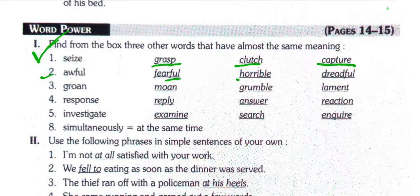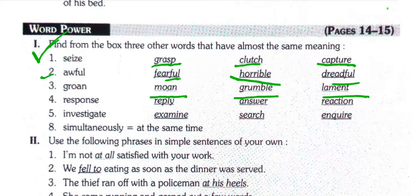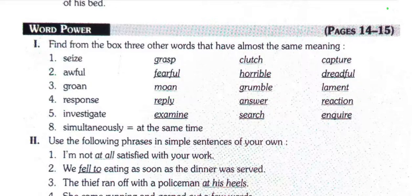Fearful, horrible, and dreadful. For 'groan': moan, grumble, lament. For 'response': reflect, answer, reaction. For 'investigate': search, examine, inquiry. And 'simultaneously' means at the same time.